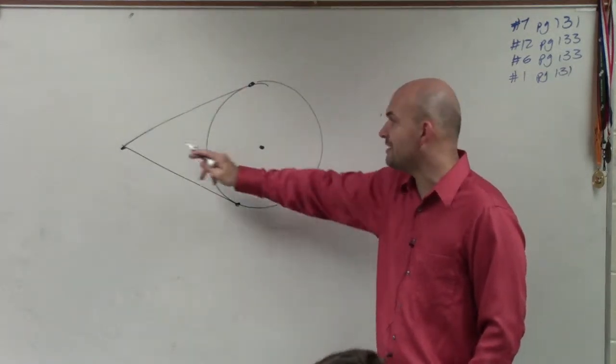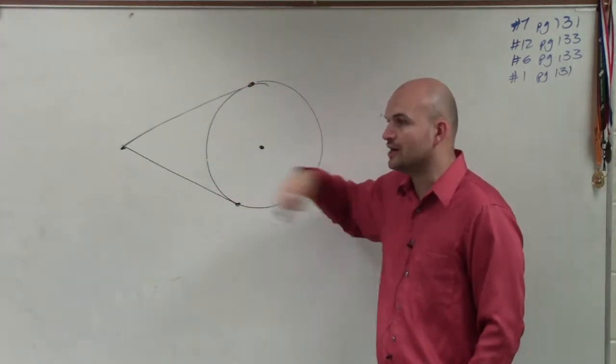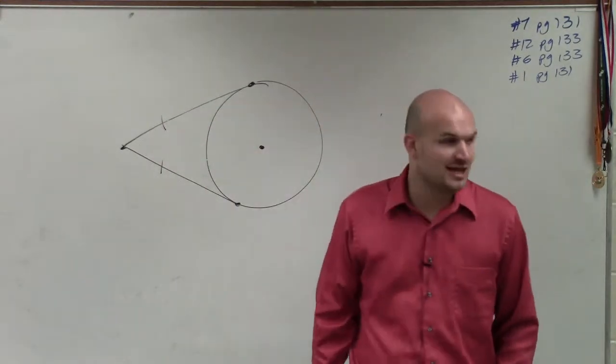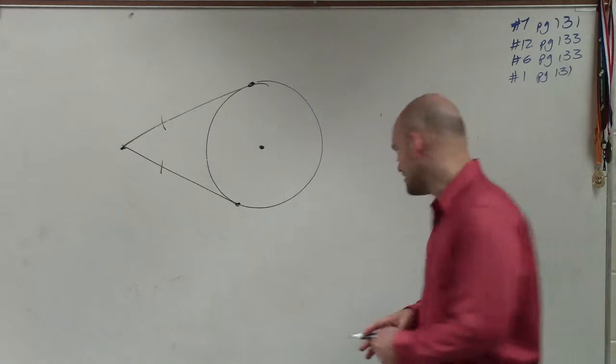How do their lengths compare? If I have, from a point, two tangent lines go into a circle, how do these two lengths compare? They're exactly the same, right? When you have two tangent lines, those are going to be correct. That's what we talked about last class period.